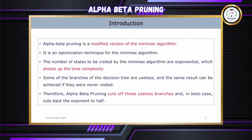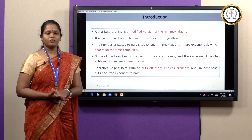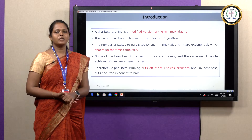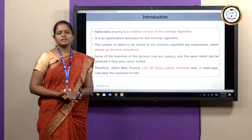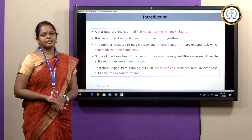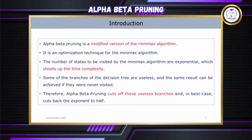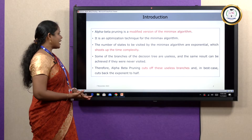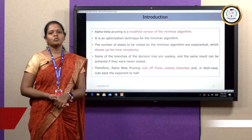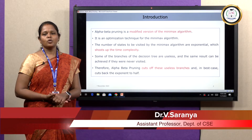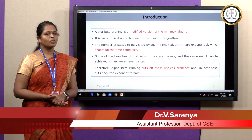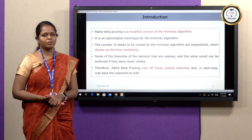Alpha-beta pruning is the modified version of the minimax algorithm. It is an optimization technique of the minimax algorithm. Before discussing alpha-beta pruning, we will first discuss the problem with the minimax algorithm. In minimax, we need to search or traverse all the possible paths, which leads to exponential time complexity problems. To overcome this, we are going to discuss alpha-beta pruning.